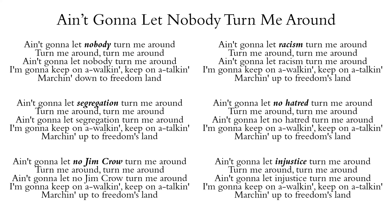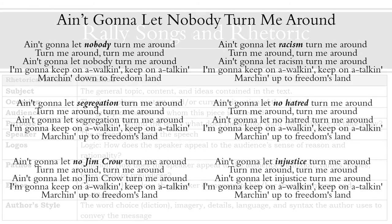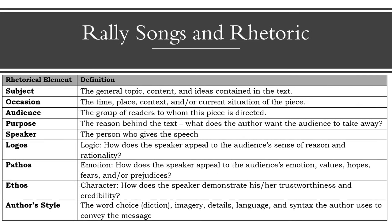Just as important as the change in words is the repetition of words. Each stanza repeats: I'm gonna keep on walking, keep on talking, marching up to freedom's lane. This conveys a tone of determination — they will not stop until they are heard and change happens. The repetition also makes it easy to sing along with, which is important for a rally song. The more people singing, the stronger the message. Connecting these ideas to the rhetorical elements from this lesson, we can see that not only do we have a clear purpose, we primarily use pathos and author style in order to convey that message.